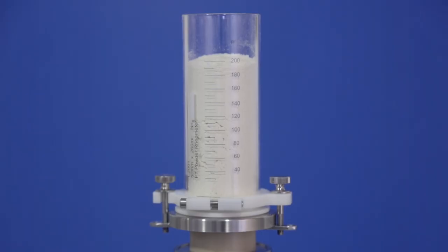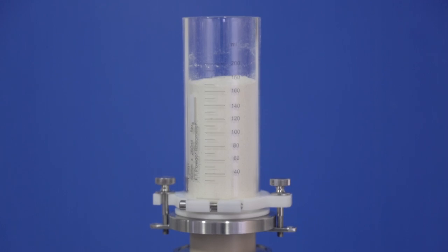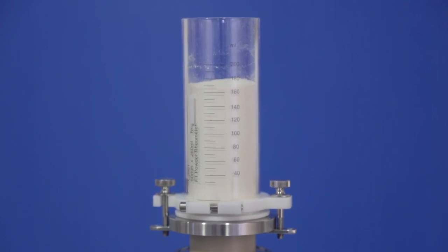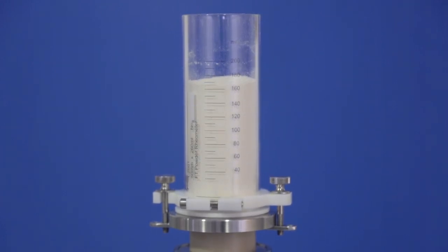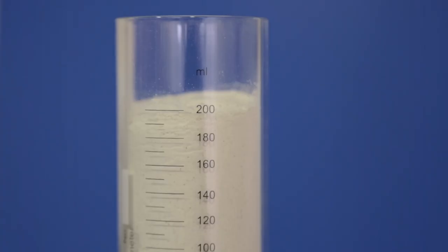Here we can see the sample put on a tapping device to subject it to some compaction, and just a few taps transforms the way the powder behaves. Its density change might be in the order of 10, 20, or 30 percent, but in terms of its flow property changes it now might be five times to ten times less likely to flow.